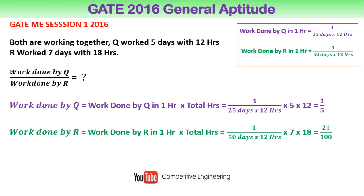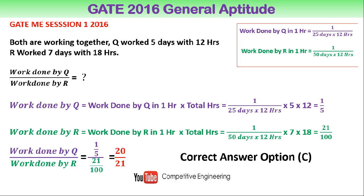Similarly, work done by R is 1/(50 × 12) multiplied by total hours R worked: seven days × 8 hours per day, which gives 21/100. So work done by Q is 1/5 and work done by R is 21/100. The ratio of work done by Q to work done by R is (1/5) ÷ (21/100), which gives 20/21.